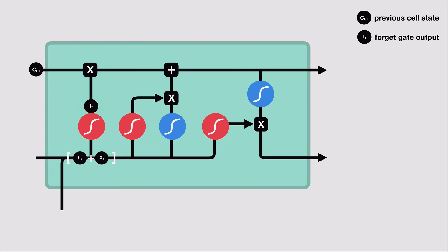To update the cell state, we have the input gate. First, we pass the previous hidden state and the current input into the sigmoid function. That decides which values will be updated by transforming values to be between zero and one. Zero means not important, one means important. You also pass the hidden state and current input into the tanh function to squish values between negative one and one. This helps regulate the network. Then you multiply the tanh output with the sigmoid output. The sigmoid output will decide which information is important to keep from the tanh output.